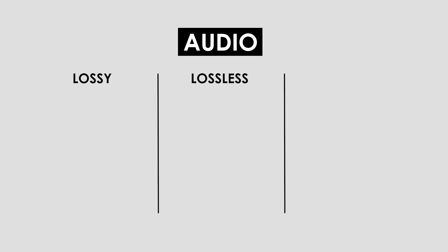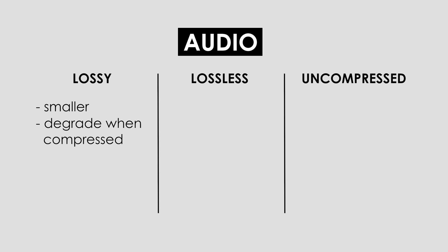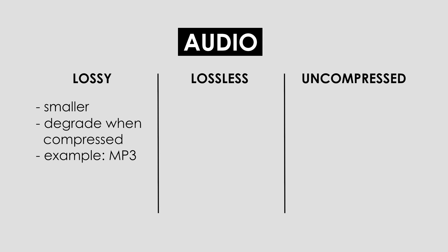So let's start with audio. Audio files generally fall into one of three categories: lossy, lossless, and uncompressed. Lossy files are smaller and they degrade or permanently lose some data when they're compressed. An example of a lossy audio file format is an MP3. MP3s may sound okay in your headphones, but professional audio engineers and filmmakers generally don't like to work with lossy formats because they lose quality that is irretrievable when they're compressed.